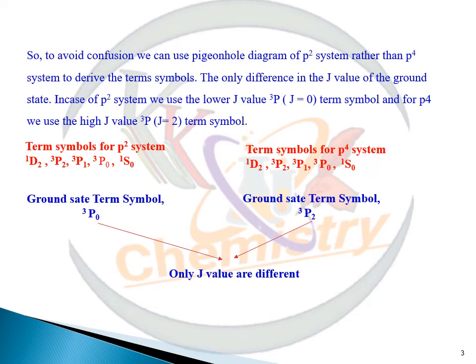So to avoid confusion we will use pigeonhole diagram for P² system. The only difference in the term symbol or in the ground state. How? We know that for P² system the term symbol will be singlet D₂, triplet P₂, triplet P₁, triplet P₀, singlet S₀. And for P⁴ system the same term symbol can be derived.